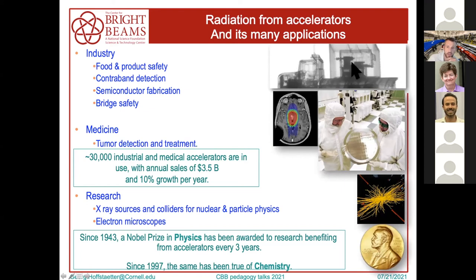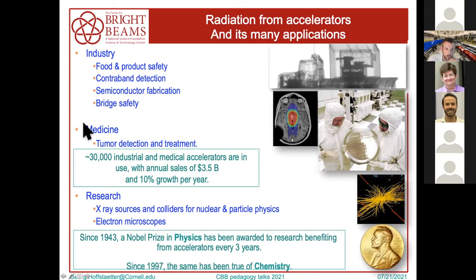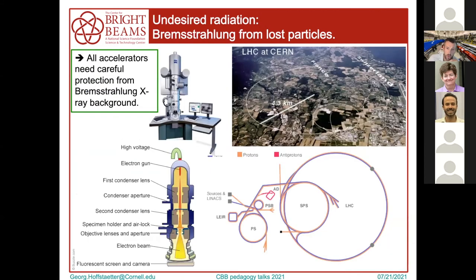For example, X-raying of ships, cargo, or trucks is done with bremsstrahlung X-rays. Semiconductor fabrication sometimes uses bremsstrahlung photolithography. Bridge safety inspections use bremsstrahlung radiation. In medicine, when you go to a doctor, your X-ray is produced by bremsstrahlung. Unfortunately, it's also common as unwanted radiation — whenever a charged particle gets lost in the beam pipe of any accelerator, from a small electron microscope up to the LHC, it produces lots of radiation that is dangerous and must be carefully shielded.